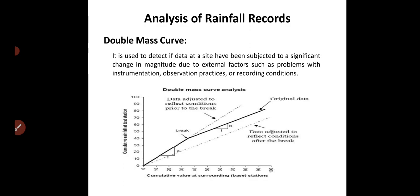From rainfall measurements, we cannot simply assume results — we have to analyze the records. We have duration and intensity of rainfall in centimeters and must analyze what the expected runoff will be and what the climate conditions will be. We can prepare for flooding, heavy rainfall, or droughts. The analysis of rainfall records begins with the double mass curve method.